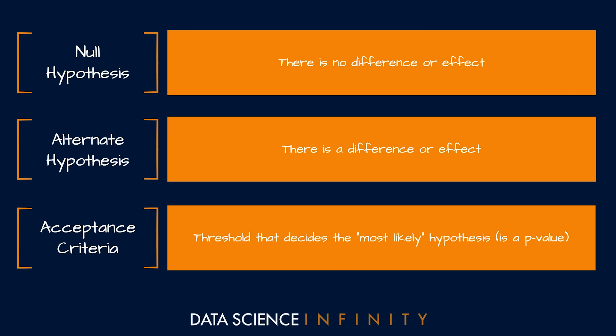Every time we implement a hypothesis test, before we run the test itself and before we look at any numbers, we must first specify our null hypothesis, our alternate hypothesis, and our acceptance criteria. In the case of our specific question, the null hypothesis states that there isn't a difference — our team's mean vertical leap is equal to the mean of the rival team.